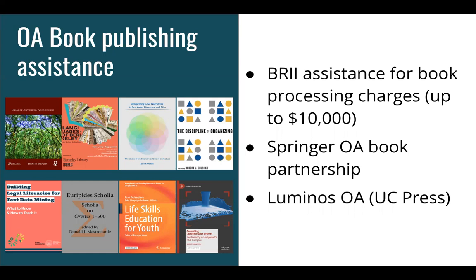The good news is that BRII can also help pay for book processing charges for fully open access books published by Berkeley authors. The limit is $10,000 for books, with the requirement that your open access book be licensed under a Creative Commons license that permits the creation of derivative works. As one example, last year Professor Brent Mischler from the Integrative Biology Department published his book 'What, If Anything, Is a Species?' open access via Taylor and Francis with financial support from BRII.